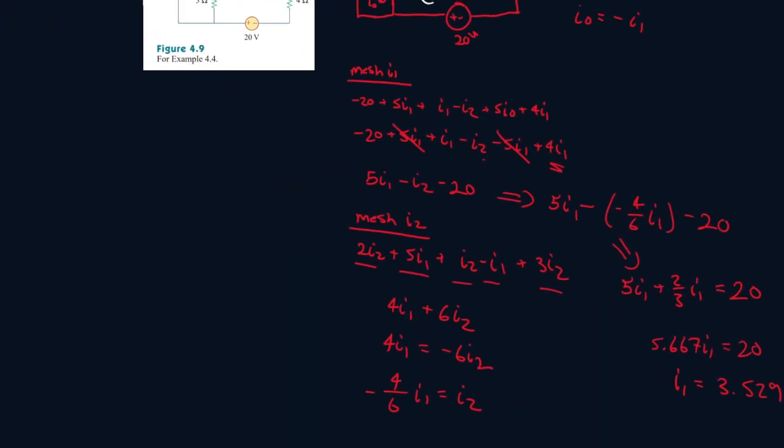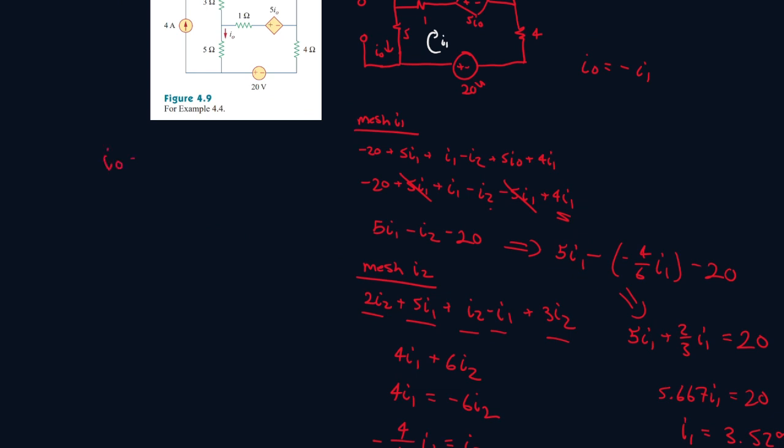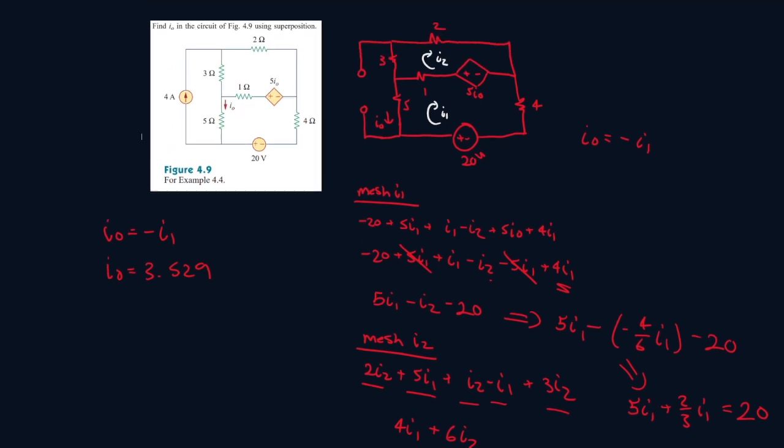and recall I0 is equal to negative I1, so I0 is equal to 3.529. But this is not this I0 value, because we're not taking into account this current source. So what we have to do now is turn off this one and turn this one back on, and then resolve for I0 for that one. So let's call this one I0 prime.